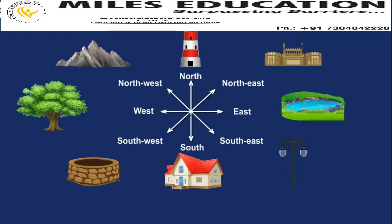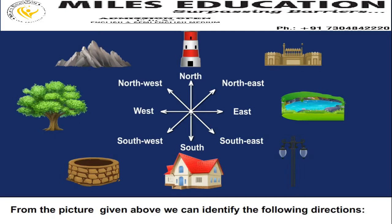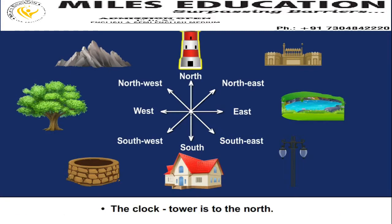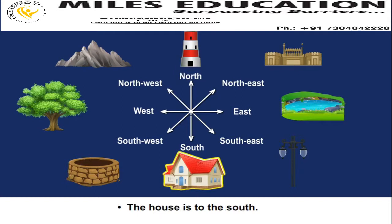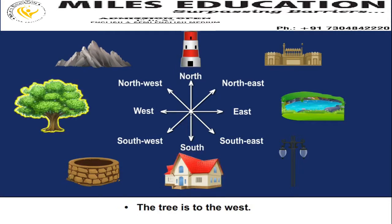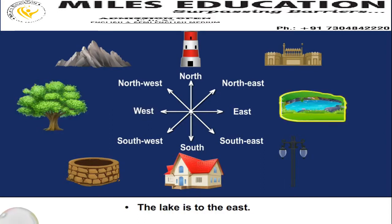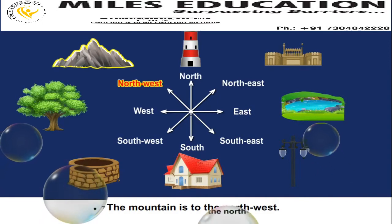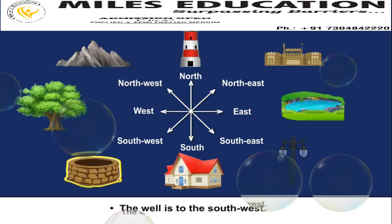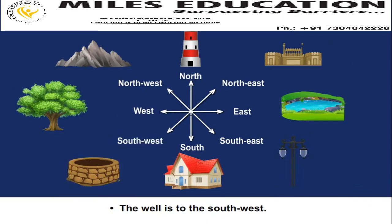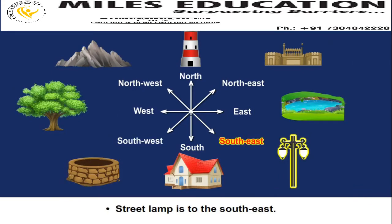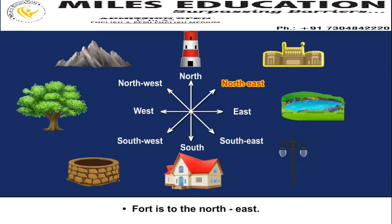Identifying Directions and Sub-Directions. From the picture given above, we can identify the following directions. The clock tower is to the north. The house is to the south. The tree is to the west. The lake is to the east. The mountain is to the north-west. The well is to the south-west. The street lamp is to the south-east. The fort is to the north-east.